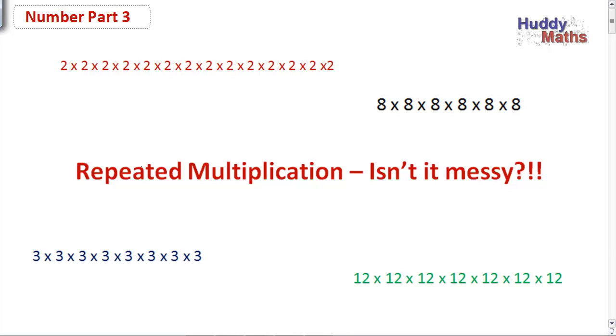Hey, welcome to number part three. What's going on here? It's pretty messy when you've got a lot of numbers the same, multiplying them all together. Is there a better way?